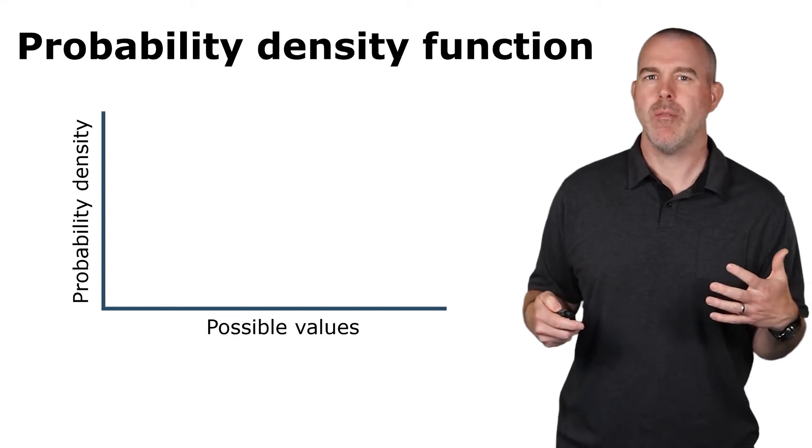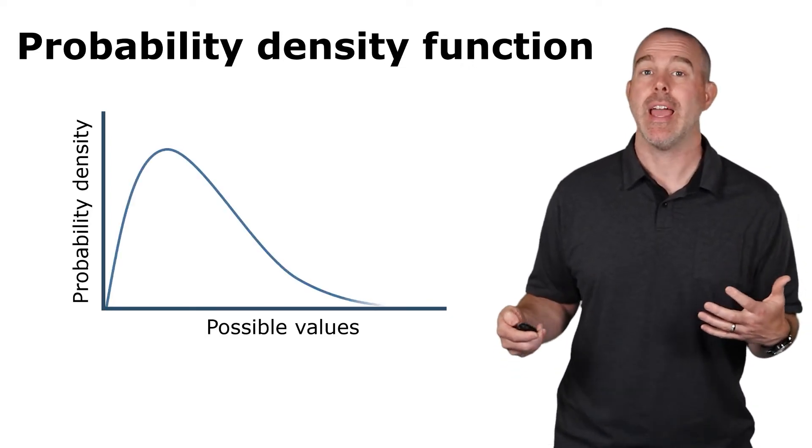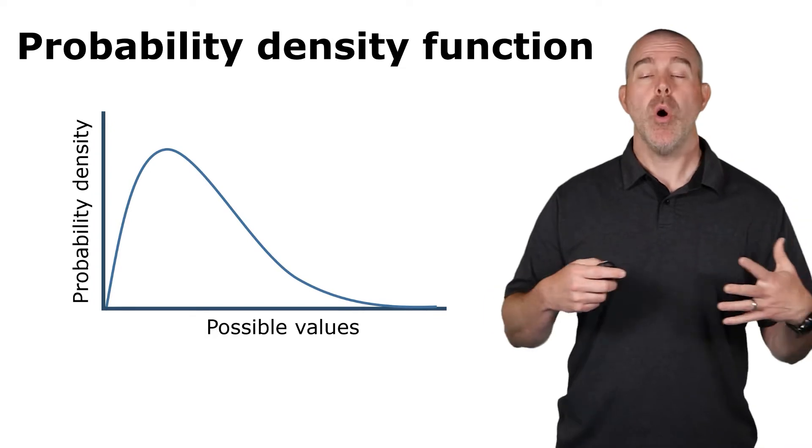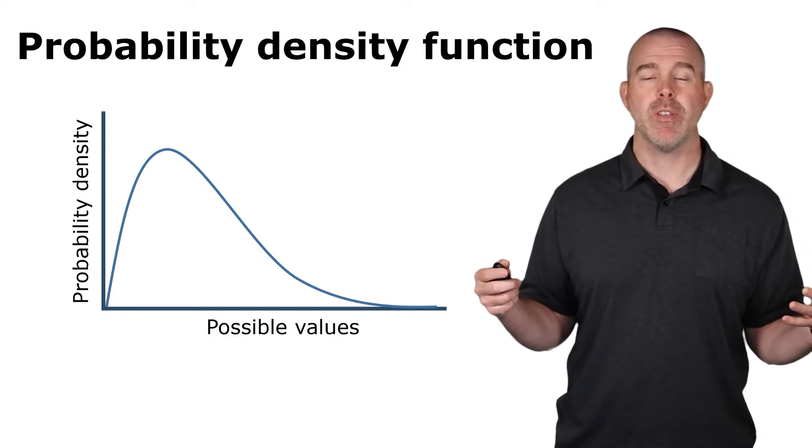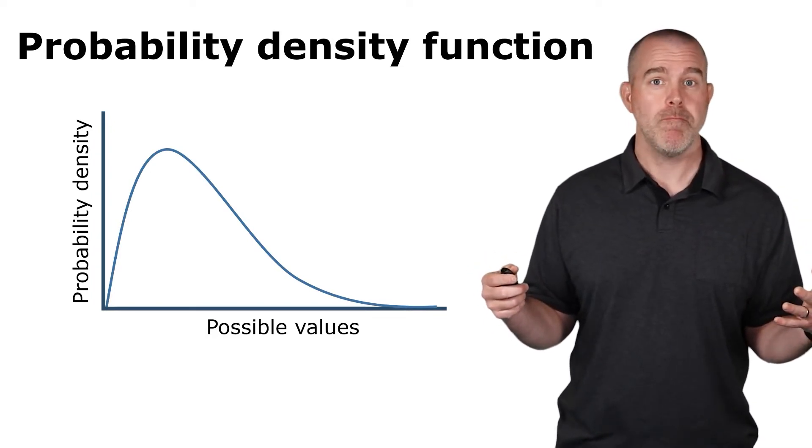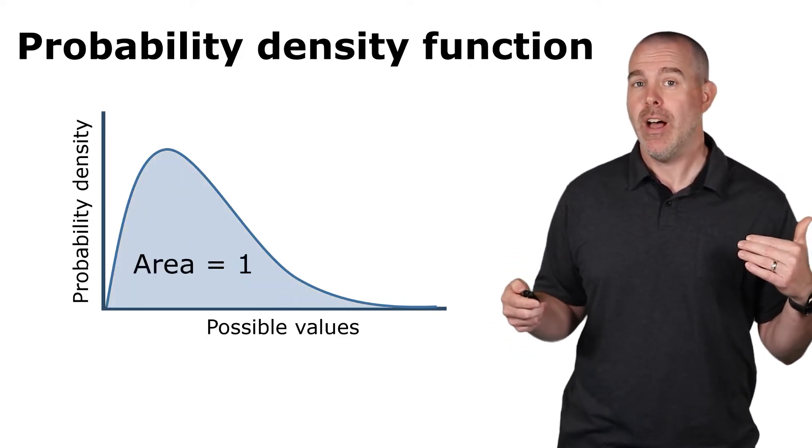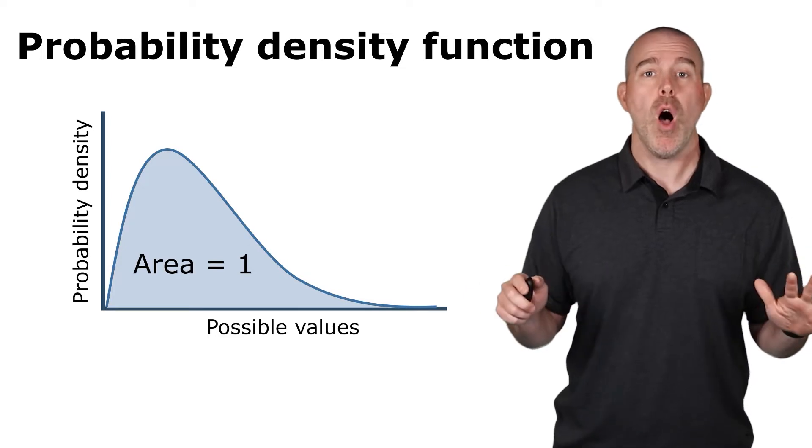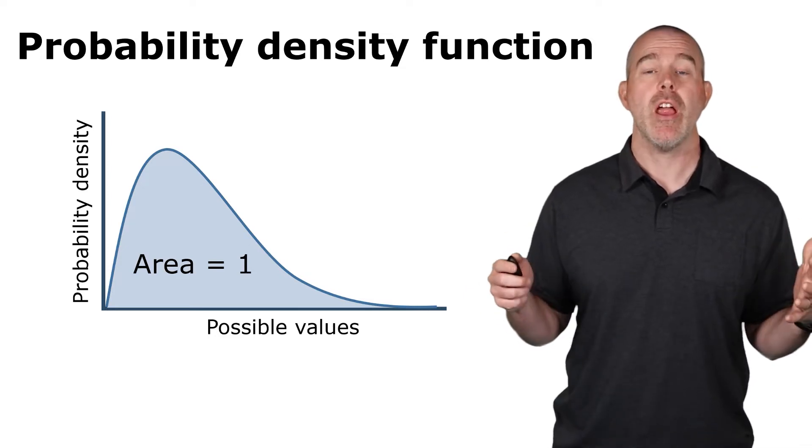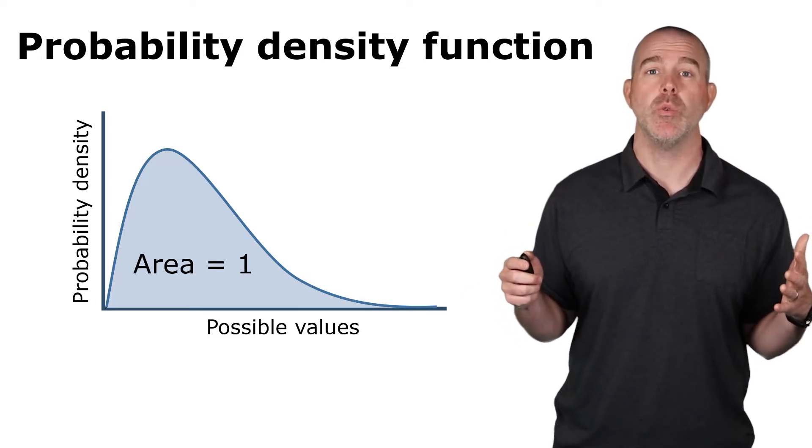And we might have some curve say looks something like this. Well, we know the total probability of all possible events must be 1, and we know that the area is probability. Well, that means that the area under this curve must be 1. And this is true for all probability density functions. The area under the curve must be equal to 1.